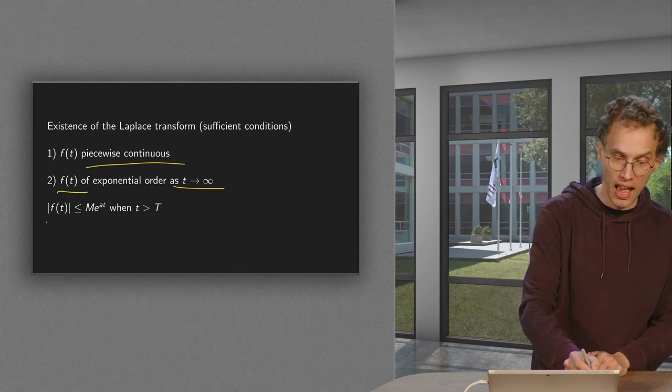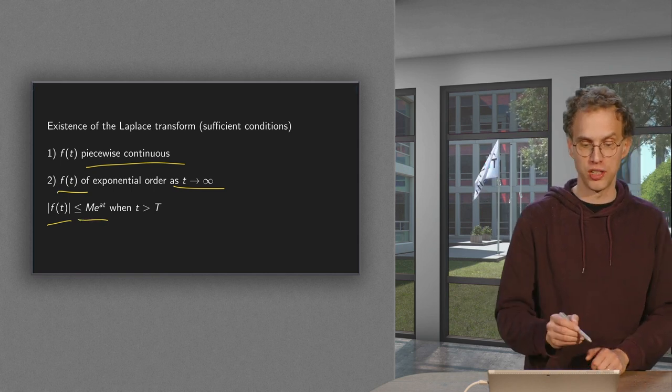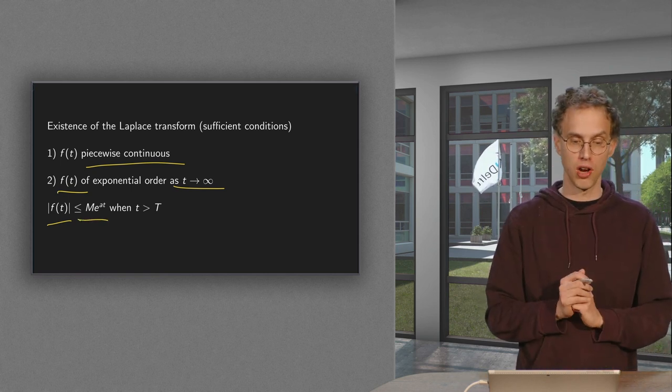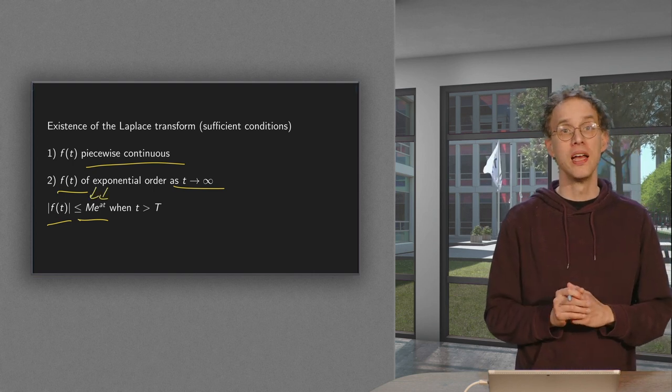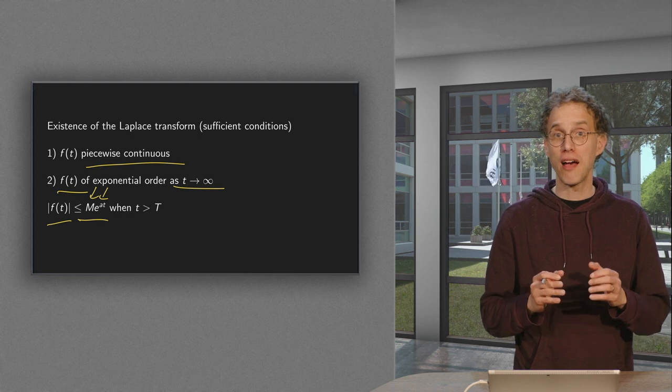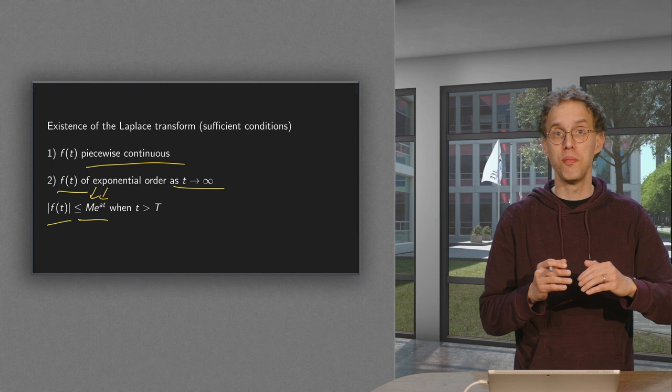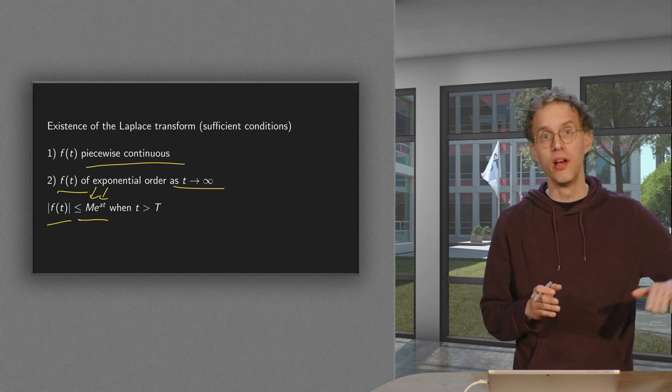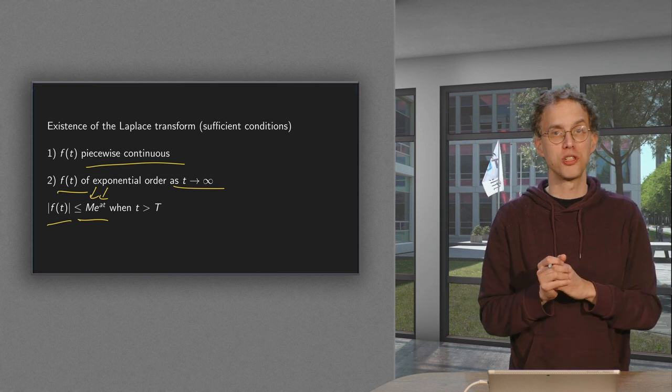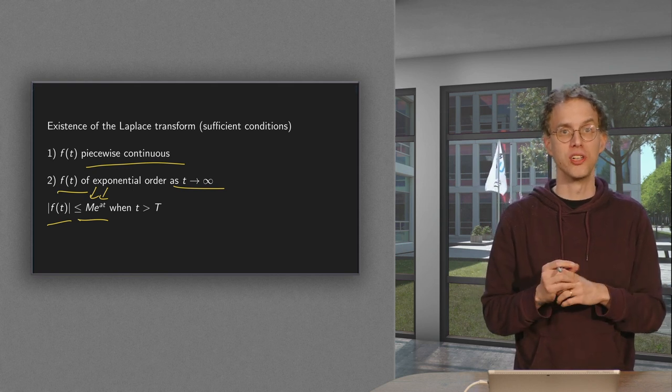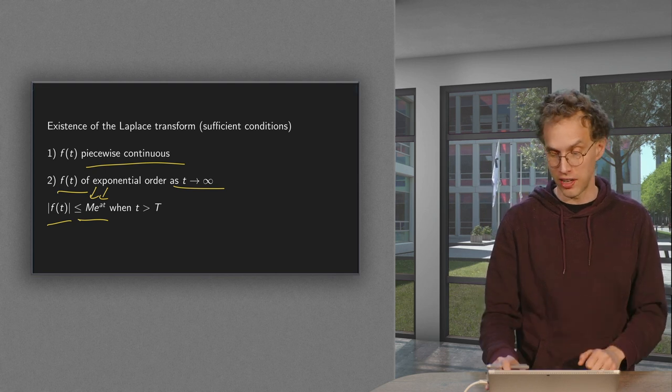That means that f of t has to be smaller than some exponential function if t becomes large. So smaller than some e to power at times some large number M. So that means that f can become really, really large. It only has to be below some exponential function. Well, exponential functions are very large. And f only has to be below an exponential function. So it's not such bad conditions. Many, many functions satisfy those.